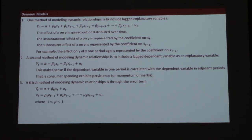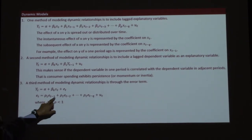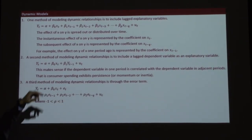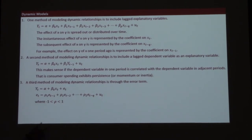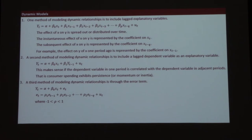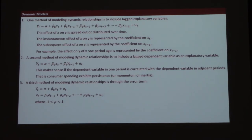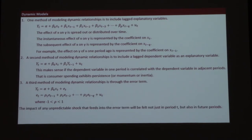Rho is the coefficient on the lag variable — it's like our betas but it's in the error terms — and it's generally going to be between negative one and one, because normally we see the persistence effect diminishing over time.